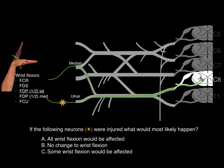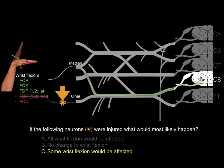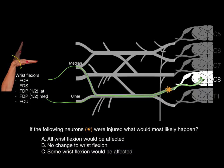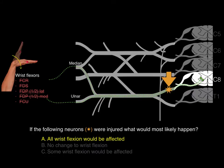Practice question: if the ulnar nerve neurons were injured, what would most likely occur? Some wrist flexion would be affected — the flexor carpi radialis, flexor digitorum superficialis, and half of the FDP would be okay because the median nerve is unaffected. Only the ulnar contribution to wrist flexion would be affected. But if all C8 motor neurons were knocked out, all wrist flexion would be affected, because all motor neurons going via both the median and ulnar nerves would be lost.